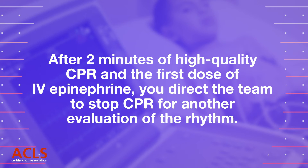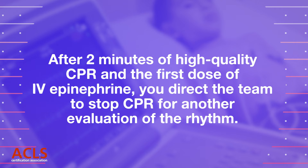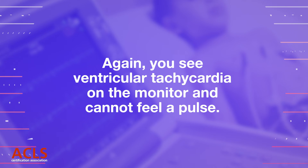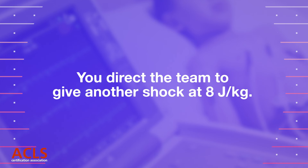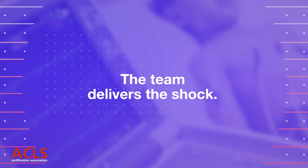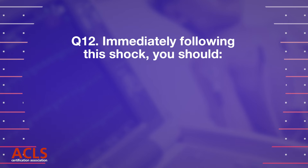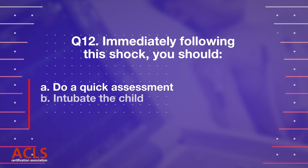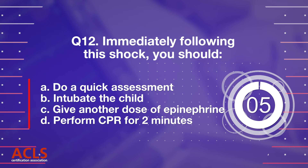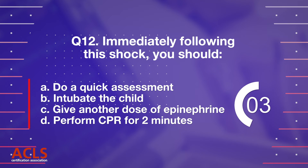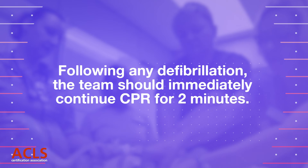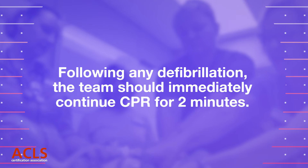After two minutes of high-quality CPR and the first dose of IV epinephrine, you direct the team to stop for another rhythm evaluation. You again see ventricular tachycardia on the monitor and cannot feel a pulse. You direct the team to give another shock at 8 joules per kilogram. Question 12: Immediately following this shock you should: A) Do a quick assessment, B) Intubate the child, C) Give another dose of epinephrine, D) Perform CPR for two minutes.